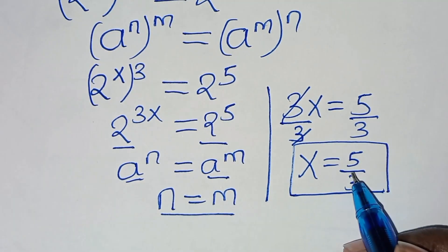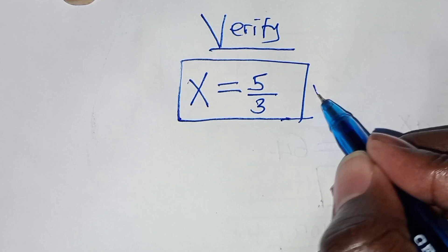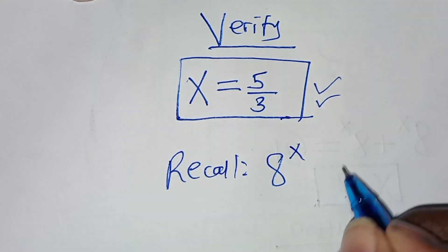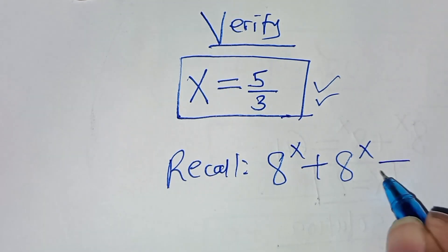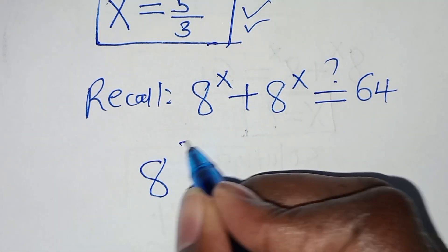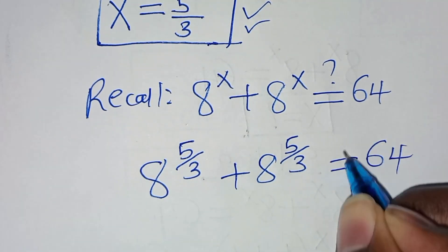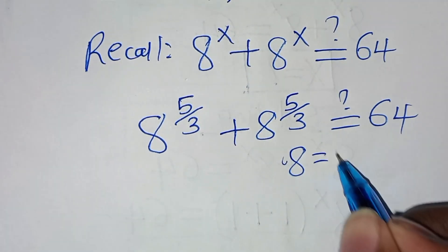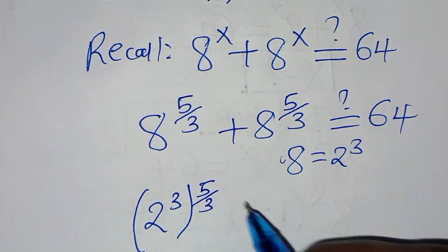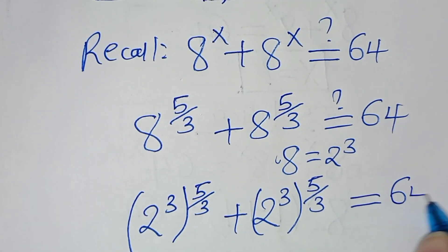So let's verify that this value of x satisfies the equation. We have that 8 to the power of x plus 8 to the power of x should give us a value of 64. Let's substitute x, so that we have 8 to the power of 5 over 3, plus 8 to the power of 5 over 3, this should give us a value of 64. Simplifying, we get 2 to the power of 5 plus 2 to the power of 5, which should give us 64.